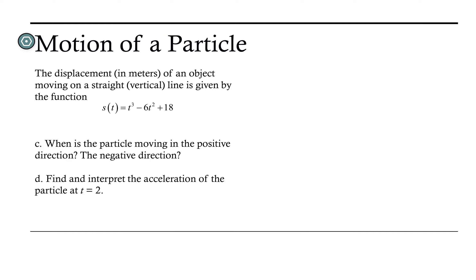Let's take a look at finding when a particle is moving in either the positive direction or the negative direction. Our function here is s of t equals t cubed minus 6t squared plus 18. In a previous video, we saw that the velocity function is 3t squared minus 12t, and that the velocity function equals 0 when t equals 0 seconds or 4 seconds.